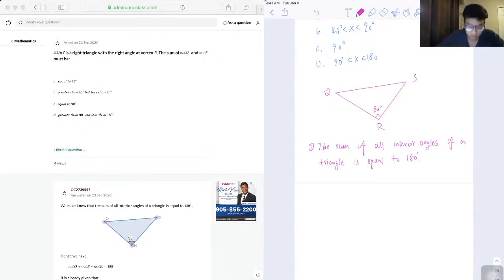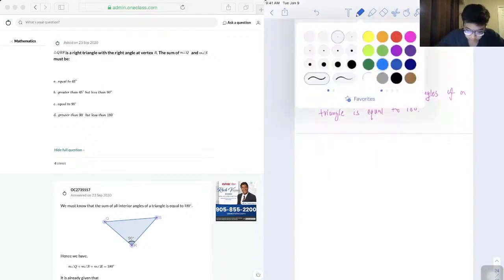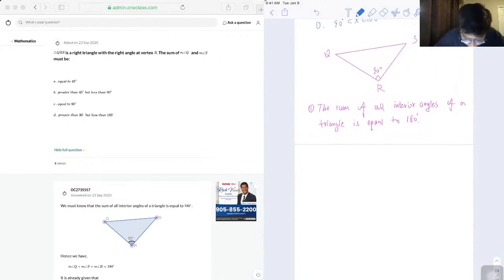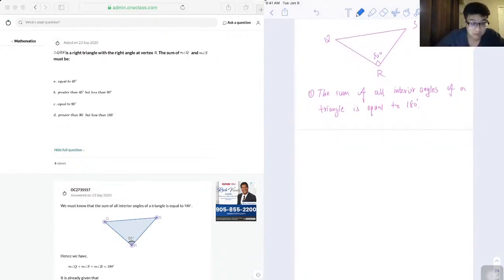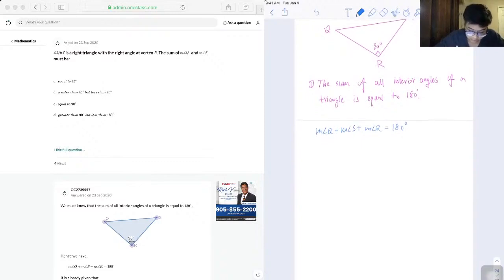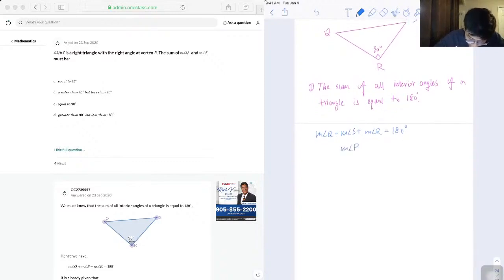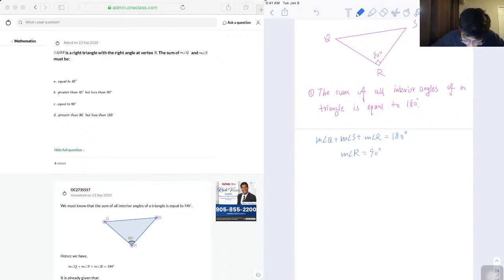Therefore, by using the three angles QRS, we can represent it by angle Q plus angle S plus angle R equals 180. And we're given that angle R is equal to 90 degrees in the question.